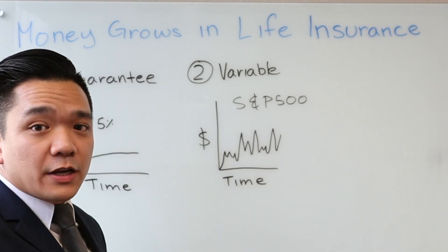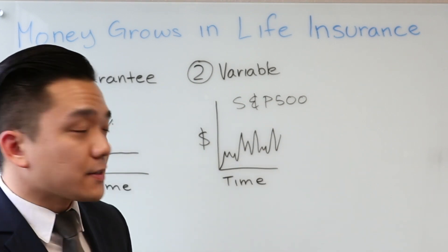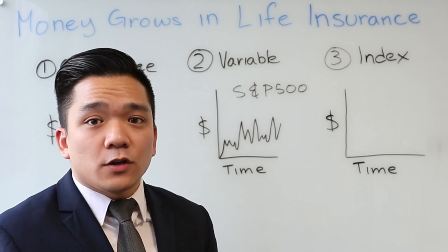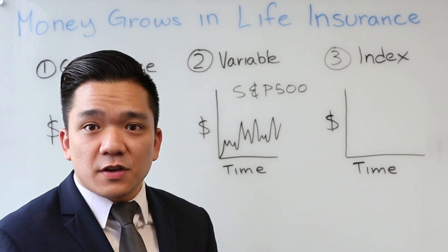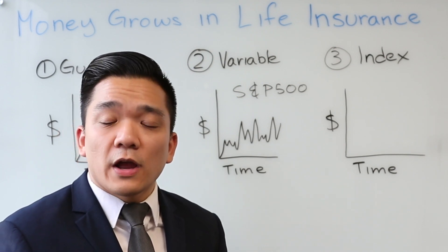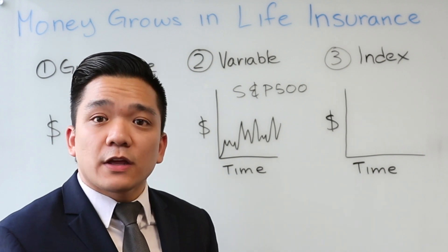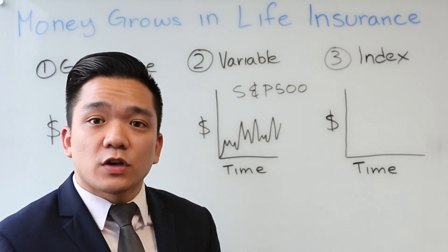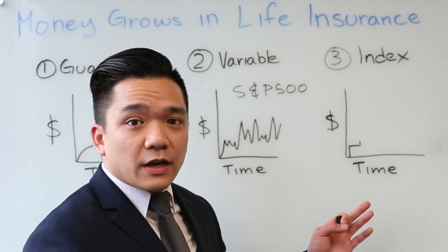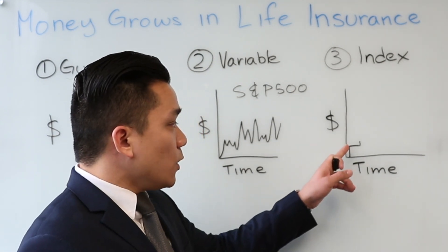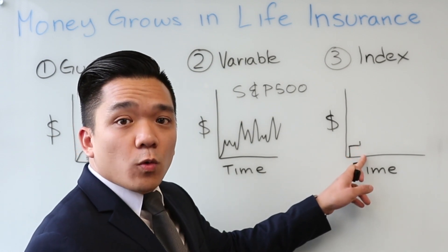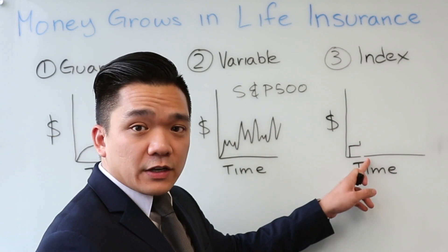We actually kind of got a blend of the two, and we call that an index. And what the index does is it's called a mimicking of the market. And again, you can pick something like the S&P 500 to mimic. However, you're given something called a floor as well as a cap, meaning that you cannot lose a certain percentage of money, but also you cannot gain past a certain point of money as well. And with an index, your money goes in one year, wait for the next year before you'll see the next growth. However, it will perform within the guidelines of your index.